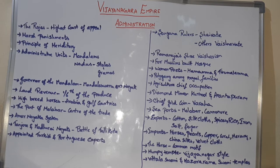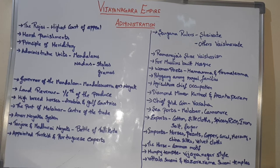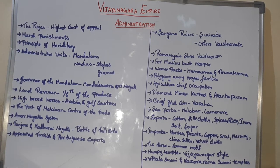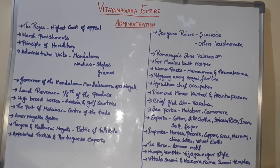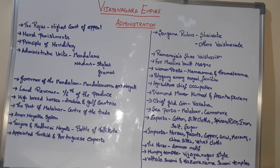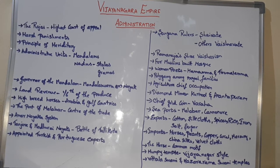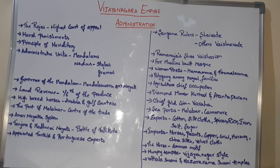In Vijayanagara administration, even prostitutes paid taxes. With that tax income, the Vijayanagara kings maintained their personal military army. Regarding the land revenue system, land revenue was fixed at generally one-sixth of the produce.